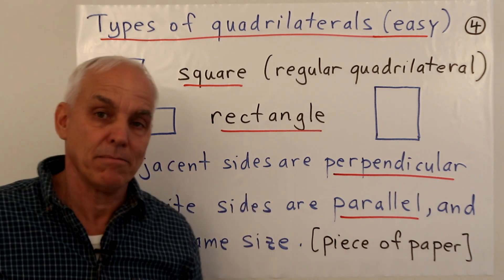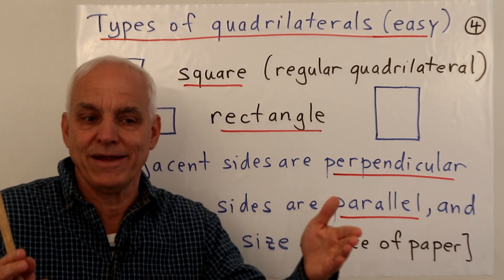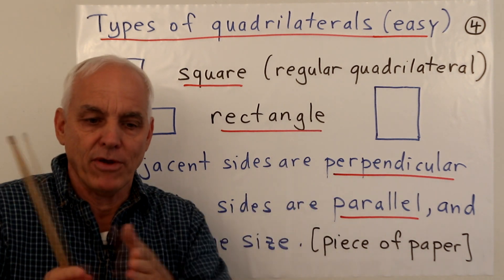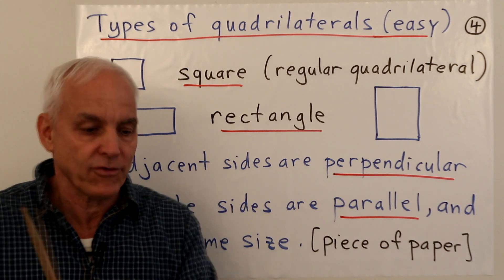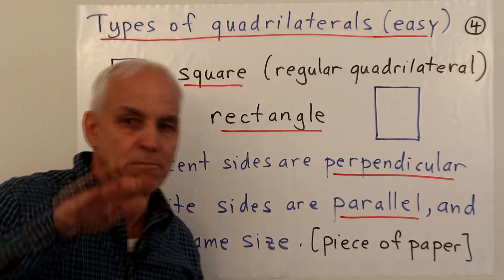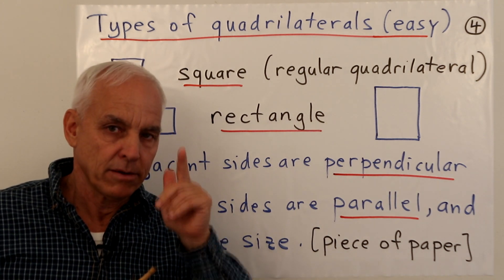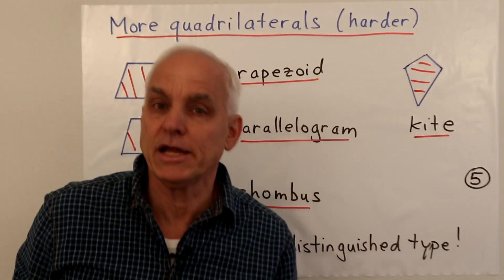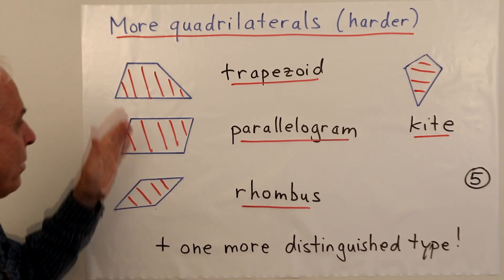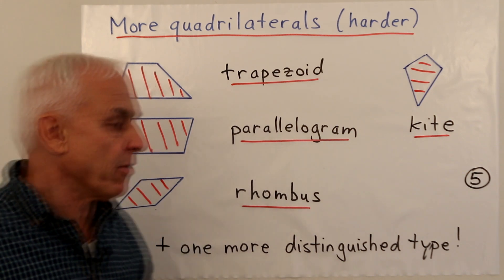We've seen that rectangles are important — they illustrated multiplication right from the very beginning. We used rectangles to visualize numbers: a number was like a row rectangle of little squares. So the square and the rectangle are almost surely the most important shapes. However, there are other kinds of quadrilaterals which are also very important, and we'll be talking about their properties later on.